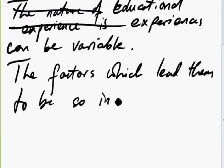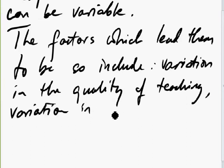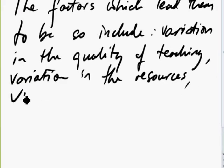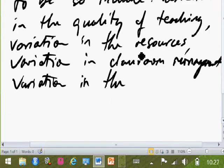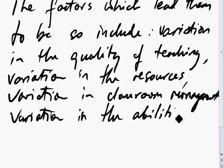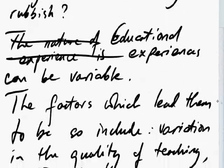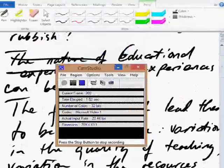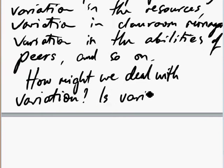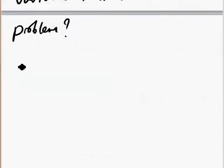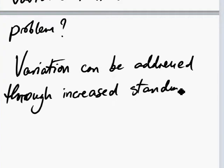The factors which lead them to be so include variation in the quality of teaching, variation in resources. I'm getting into a vibe now — I can keep writing about variation. I'm enjoying how this feels and flows. Variation in the ability of peers. How can we deal with the variation problem? Variations can be addressed through increased standardisation.